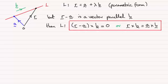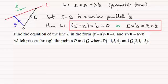Okay well I've got an example that I would encourage you to have a go at. Find the equation of the line L in the form R minus A crossed with B equals zero, and also in this other form R crossed with B equals A crossed with B. And this line passes through the points P and Q, where P has coordinates minus 1, 3, 4, and Q has coordinates 2, 1, minus 3.